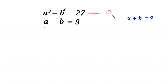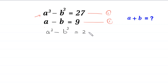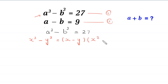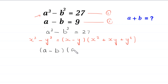Let's call this equation number 1 and this equation number 2. Starting from equation number 1: A cubed minus B cubed is equal to 27. By using the algebraic identity x cubed minus y cubed equals x minus y, times x squared plus xy plus y squared, we can factorize A cubed minus B cubed as A minus B, times A squared plus AB plus B squared, equals 27.